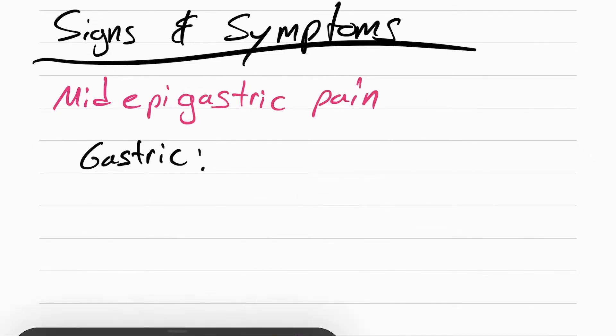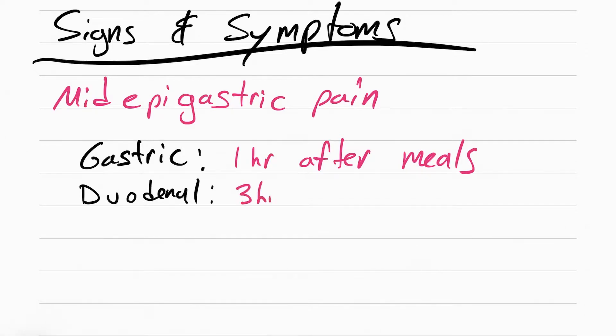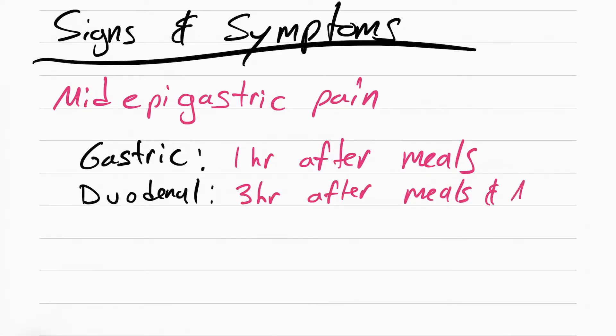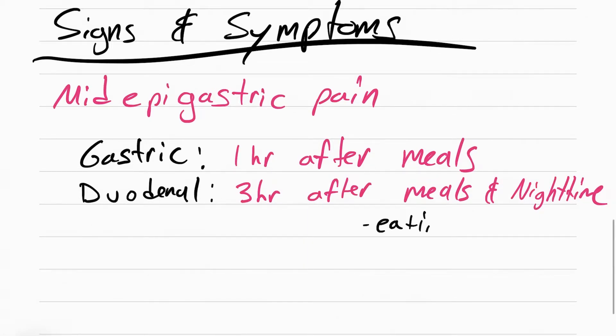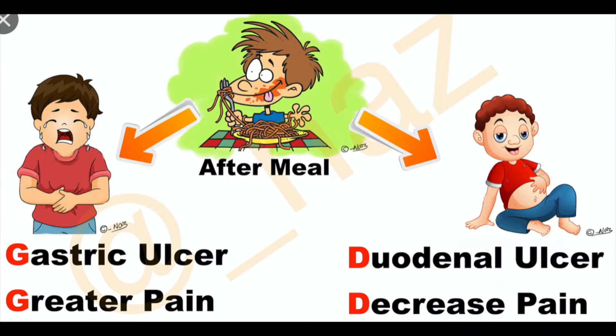The first one is called a gastric ulcer. With this one, the pain occurs one hour after eating meals. The other one is a duodenal ulcer, and this occurs three hours after eating meals and at nighttime. With this type of ulcer, the patient's going to notice that eating actually makes it feel better versus gastric ulcers, where food actually makes it feel worse.